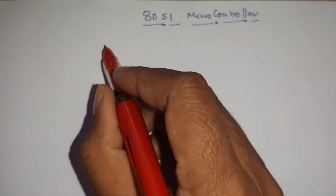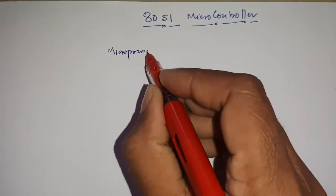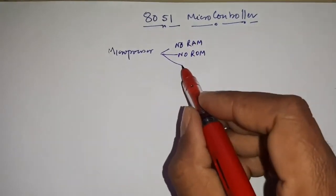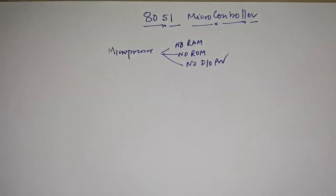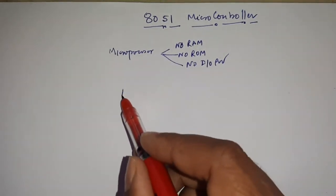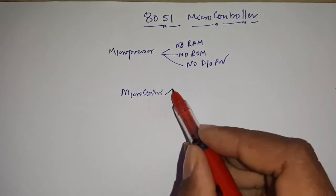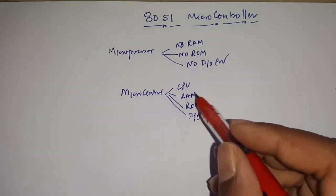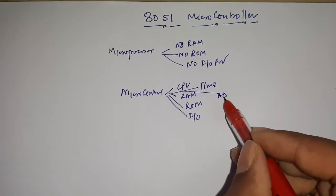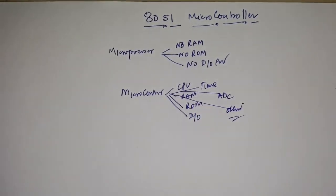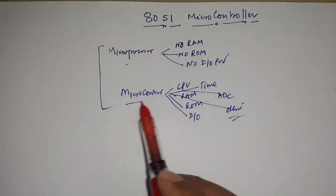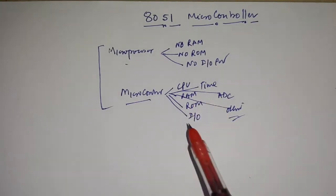If you are talking about a microprocessor, a microprocessor does not contain ROM, no RAM, and no input/output ports. These are the characteristics of a microprocessor. In contrast, if you are talking about a microcontroller, a microcontroller contains a CPU, RAM, ROM, input/output ports, timers, ADC, and other devices. Both microprocessor and microcontroller are ICs, but the difference is that in the microprocessor IC there is no ROM, no RAM, and no input/output ports.